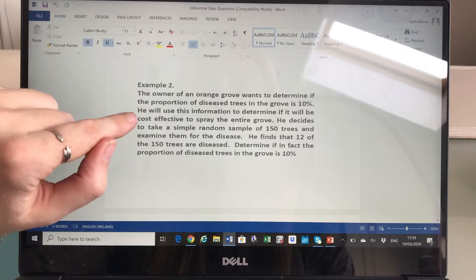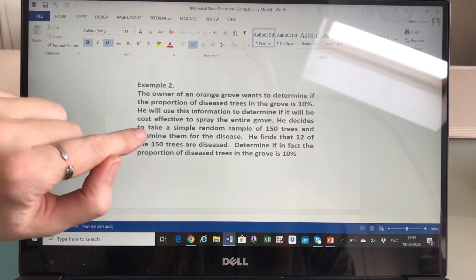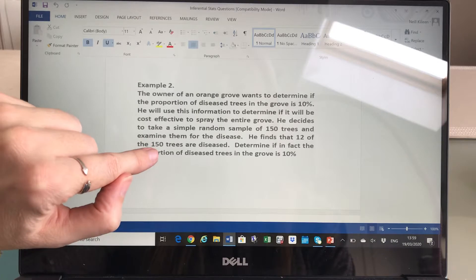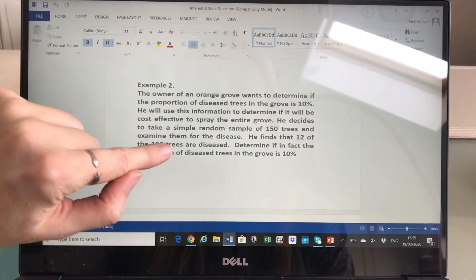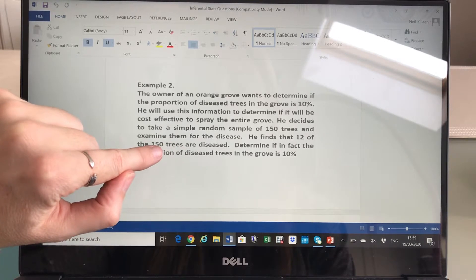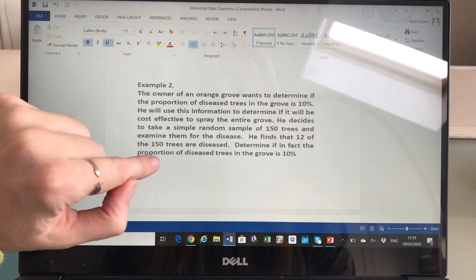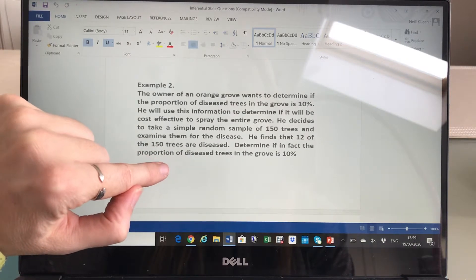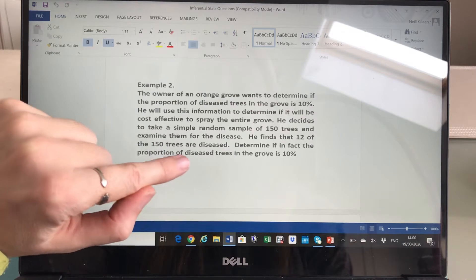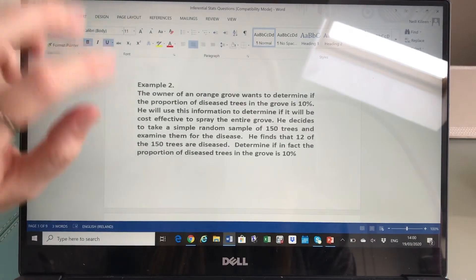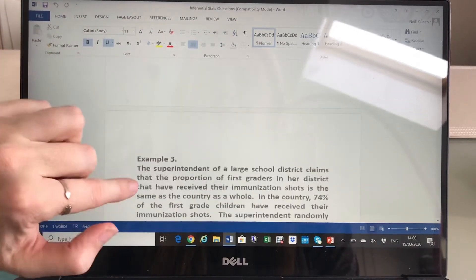So owner of a Grove wants information, decides to take a random sample. He finds out of a sample, 12 of the 150 are diseased. Determine if in fact the proportion of the diseased trees in the Grove is 10%. So it's like there's a claim there, so you could do a hypothesis test on that.